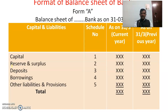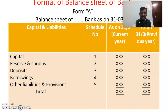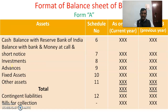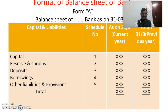This is the format of the Balance Sheet of a Bank as per Form A of the Banking Regulation Act 1949. The Balance Sheet of the Bank as on 31st March for the year will be divided into two parts: the first part is Capital and Liabilities, and the second part is Assets.